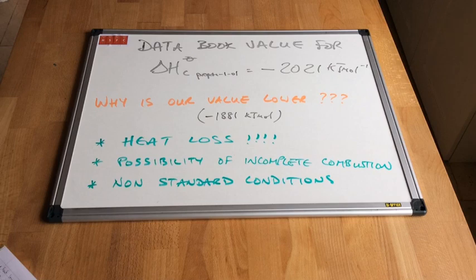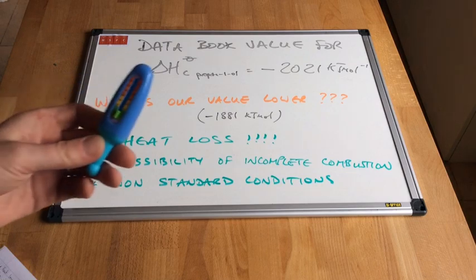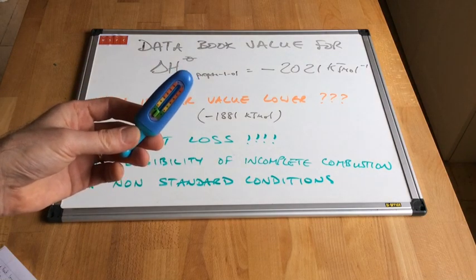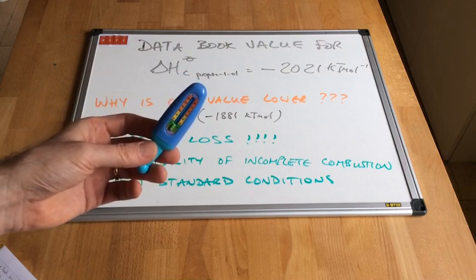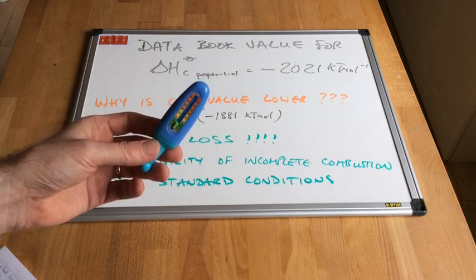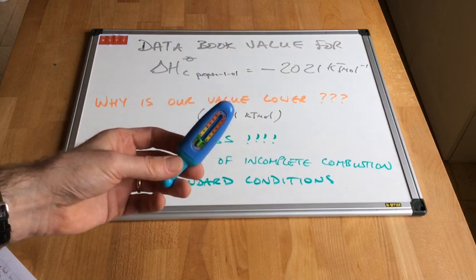And of course another possible explanation could be that the experiment that we carried out wasn't done under standard conditions. The data book values are all measured under standard conditions of 298 Kelvin or 25 degrees Celsius and 100 kilopascals of pressure. If I just have a look at the thermometer and I can see that the temperature is not at 25 degrees C and so therefore that will definitely affect the value that we calculate.